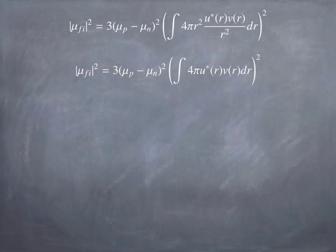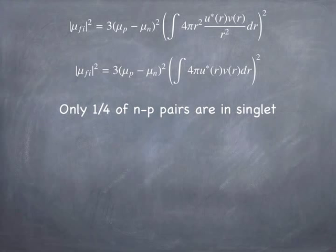Notice that the four pi r squared and the one over r squared are going to cancel. The four pi r squared comes from the volume element of the original integral, and the one over r squared comes from the wave function, being the radial function divided by r for both the bound state and the free state. And so what we wind up with is the integral of these two functions, the bound state function and the incoming free state function. But notice that we're only talking about the singlet, so only a quarter of the NP pairs are in the singlet condition. And so we get a factor of a quarter that we have to throw in here.